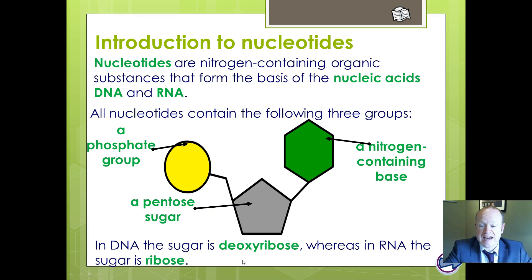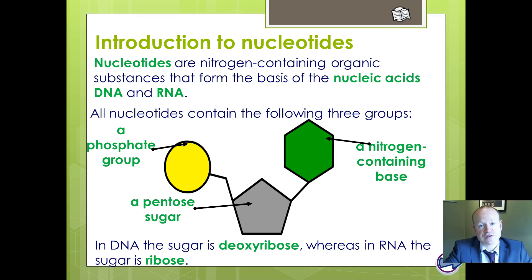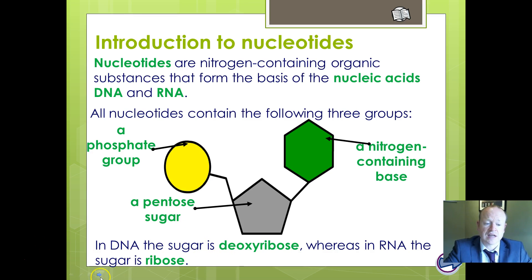DNA and RNA — deoxyribose nucleic acid and ribose nucleic acid — get their names from the pentose sugar involved. In DNA, the sugar is deoxyribose; in RNA, it's just ribose. We'll look at the structural differences between those in a moment.